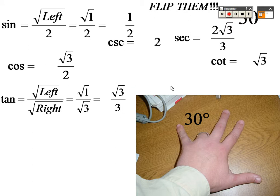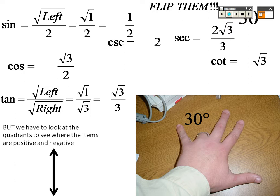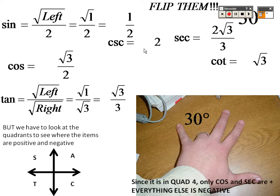Since we are in quadrant 4, only cosine is positive — so cosine and secant are positive, but everything else is negative. Tangent is negative, cotangent is negative, sine is negative, and cosecant is also negative.